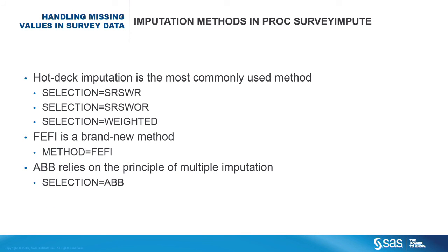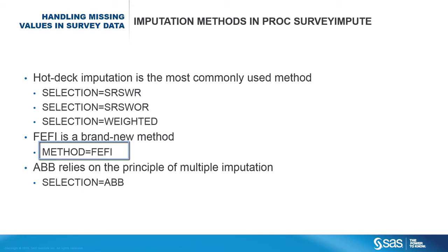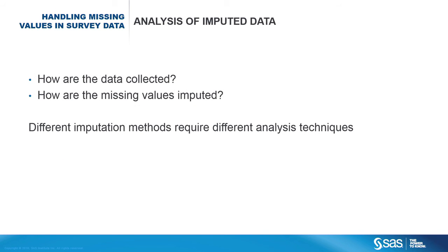Here is a quick review of the imputation methods available in Proc SurveyImpute. Use the selection= option to request different donor selection methods. Donor selection methods include simple random sampling with replacement, simple random sampling without replacement, probability proportional to the respondent weights, and approximate Bayesian bootstrap. Use the method=FEFI option to request FEFI. Analysis of imputed data depends on both the survey design and the imputation method, and different imputation methods require different analysis techniques.